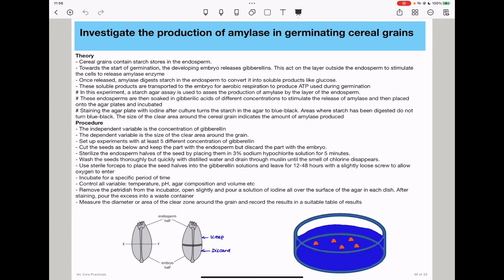Open slightly and pour iodine solution to cover the whole surface of the agar in each dish. After staining, pour away the excess. Measure the diameter or find the area of the clear zone around the grain and record the results in a suitable table.